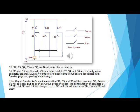Breaker auxiliary contacts are those contacts which are associated with the breaker's physical opening and closing. If the circuit breaker is open, it means S1, S3, and S5 will be closed while S2, S4, and S6 will be open. But as soon as the circuit breaker closes, the configuration of contacts S1, S2, S3, S4, S5, and S6 will change — S1, S3, and S5 will open while S2, S4, and S6 will close.